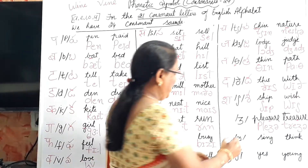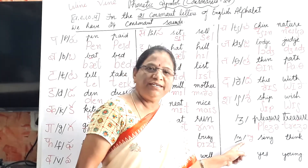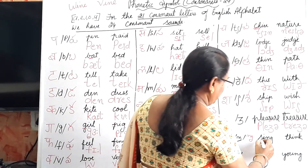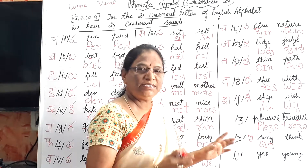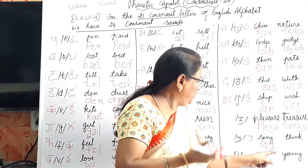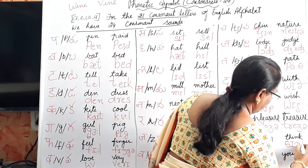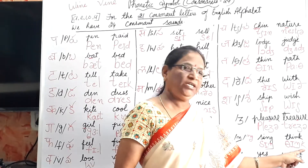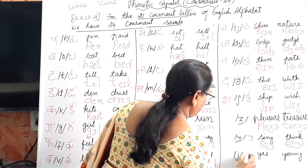The /ŋ/ (ng) sound is strange for us. Examples: sing, think. It is not 'sing' — it is 'sɪŋ.' Don't bring the G outside. Think — pronounce it as 'θɪŋk.' It is /ŋ/, not /ng/ separately.